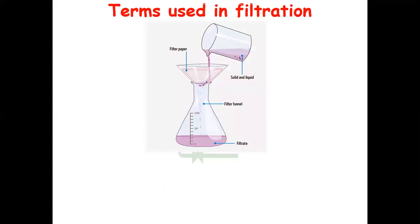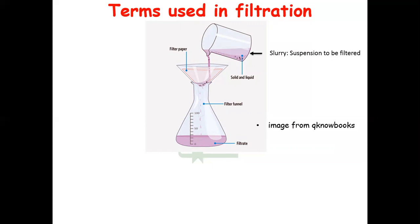Now let us see the different terms used in filtration. The solid and liquid mixture is poured on the filter paper, which is rested on a funnel, and the conical flask receives the filtrate. The first term is slurry — the suspension which we want to filter is termed as slurry. The filter medium is the porous medium used for the process of filtration which will retain the solid.